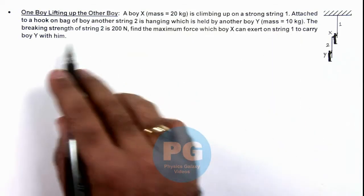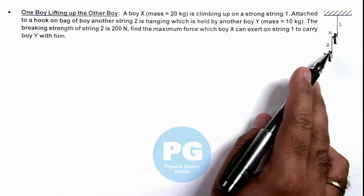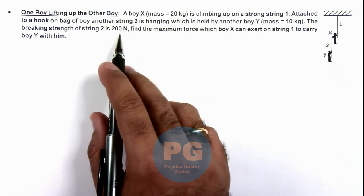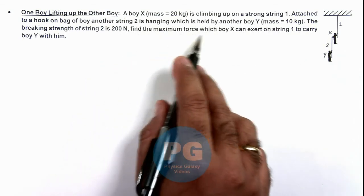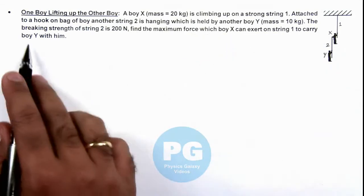And it is saying the breaking strength of string 2, on which the Boy Y is hanging, is 200 newtons. And we are required to find the maximum force which Boy X can exert on string 1 to carry Boy Y with him.